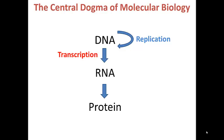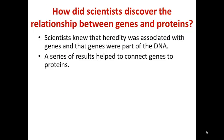In this chapter, we're going to look at two additional processes. First, transcription, in which DNA is used as a template to make RNA. And second, translation, in which RNA is used to make protein. One of the central questions associated with the central dogma is how do we get from DNA to protein, and how did scientists discover the relationship between genes and proteins?